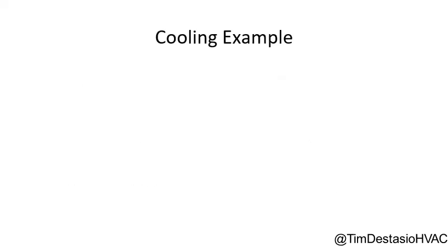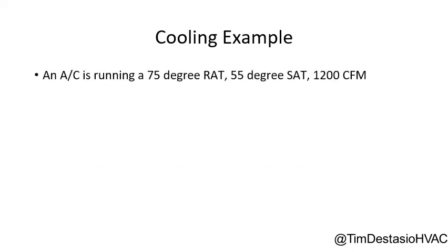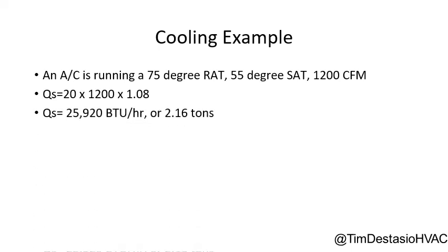Now let's apply the sensible heat formula to a cooling system. We have an air conditioning unit running a 75-degree return air temperature and a 55-degree supply air temperature, with an airflow of 1,200 CFM. Using the sensible heat formula: the temperature difference is 20 degrees (75 minus 55), times 1,200 CFM, times 1.08. We arrive at 25,920 BTUs per hour, or dividing by 12,000, that equals 2.16 tons.